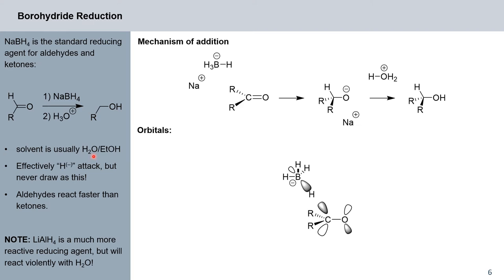And essentially the way how this works is, you react your carbonyl compound with sodium borohydride and later protonate to recover your alcohol. So solvent is usually water or ethanol. And as we said, effectively, this is the attack of an H minus. So a nucleophile, however, never draw this. So H minus would be way too reactive to exist. And as a general rule of thumb, aldehydes react much faster than ketones in this particular reaction.